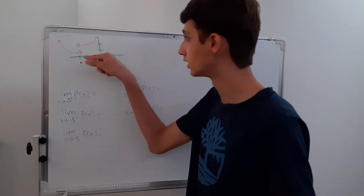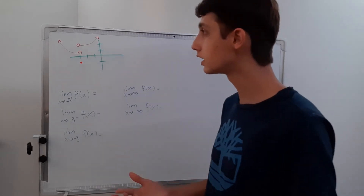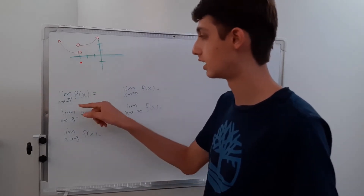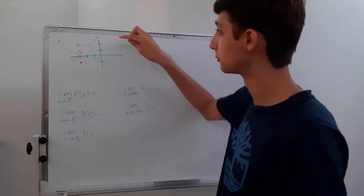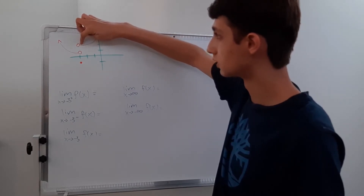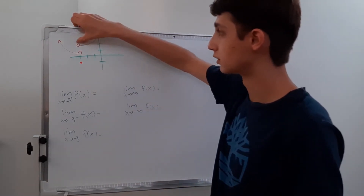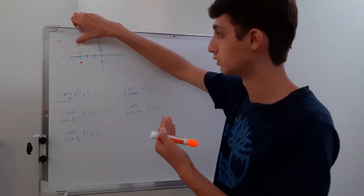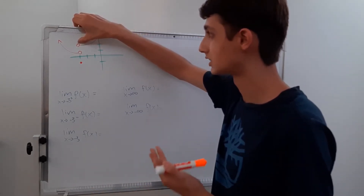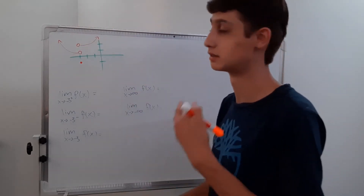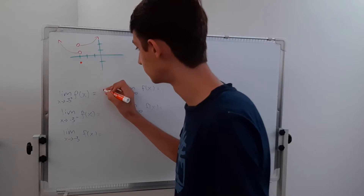So we have this weird function here and we have to identify what these five limits are — not that hard actually. The limit as x approaches negative three from the positive direction — that's this side of the graph. As we come along here, we get closer and closer, but there's a hole here. f of negative three is negative one, but there's a hole there. The limit as it approaches there is going to be two, because this point is at negative three, two. So it's going to get closer to two.